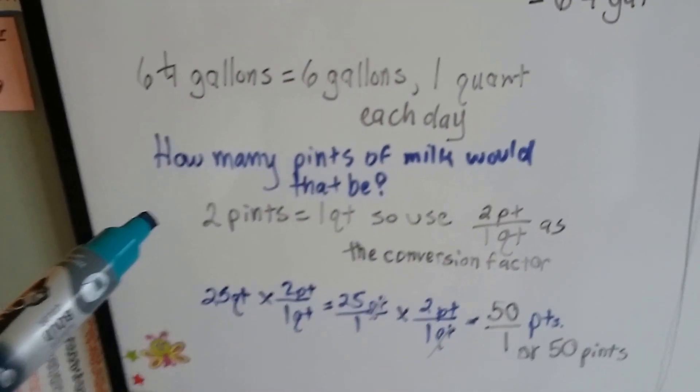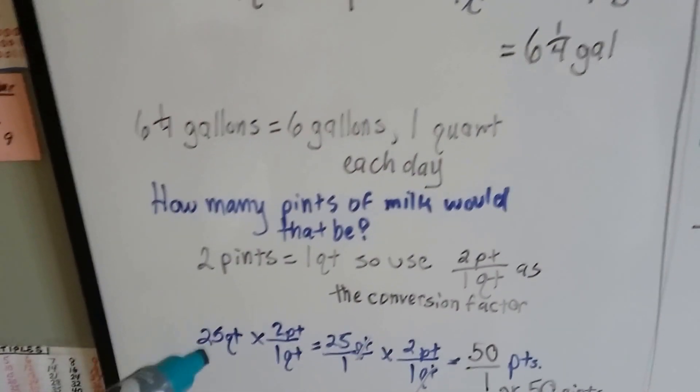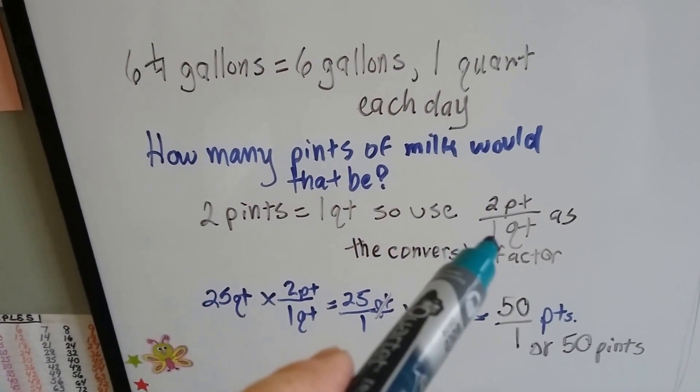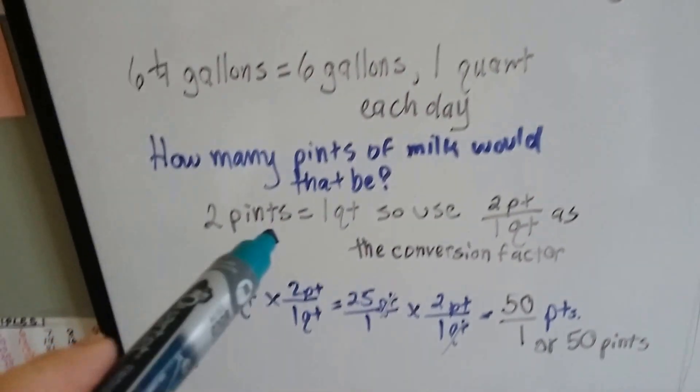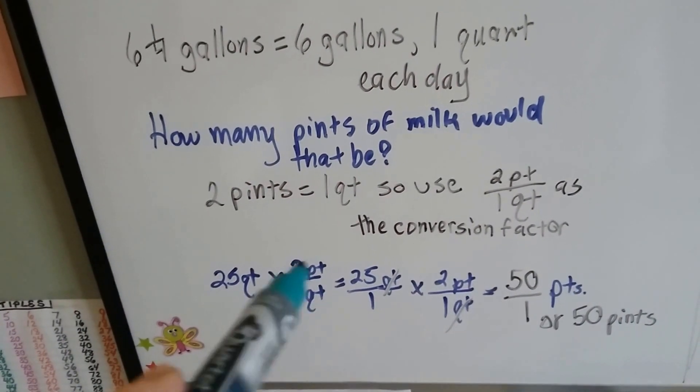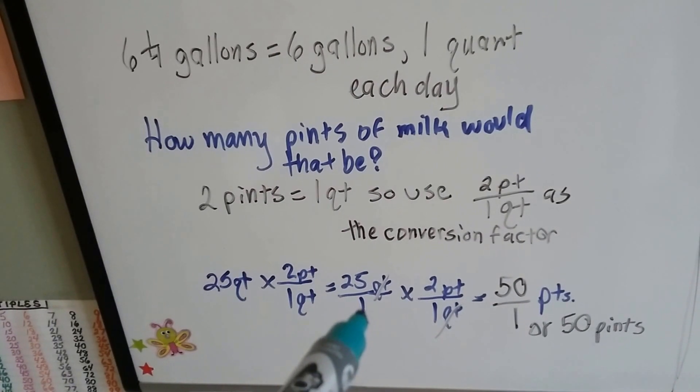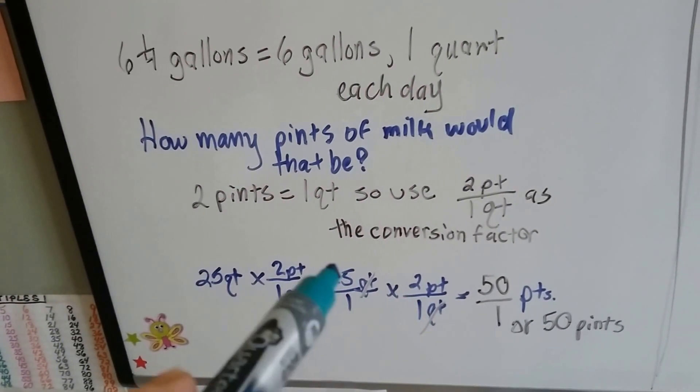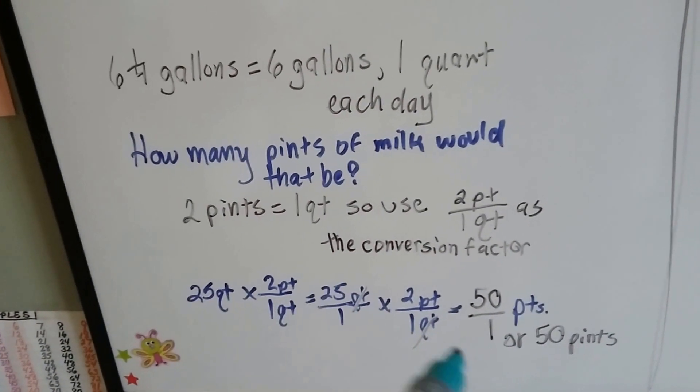What would that be in pints? 2 pints equals 1 quart. We had 25 quarts, so we can use the conversion factor 2 pints equals 1 quart. We had our 25 quarts, so we just used this as the conversion factor: 2 pints over 1 quart. We turn this into a fraction by putting it over 1, multiply it by that conversion factor. 25 times 2 is 50, and 1 times 1 is 1. The quarts canceled each other out.